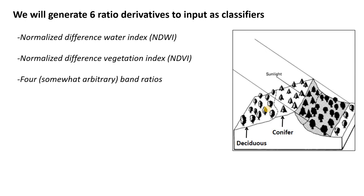Whereas if we divide one band by the other, we cancel out the brightness or relative illumination and get the relative difference in spectral reflectance. That's why we want to use band ratios or other derivatives.